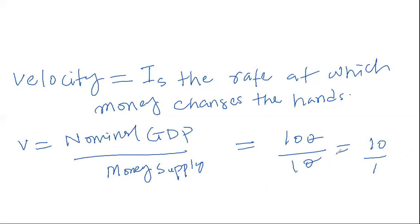This is the average rate at which money is circulating in the economy. In an economy with 100 million of output and 10 million of money supply, one rupee will be changing hands ten times. This is the core idea of velocity.